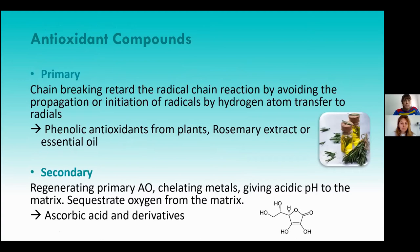Primary or chain-breaking antioxidants retard the radical chain reaction by avoiding the propagation or initiation of radicals through hydrogen atom transfer to radicals. Most primary antioxidants are phenolic antioxidants obtained from plants, but we also have rosemary extract or essential oil.